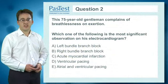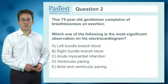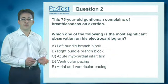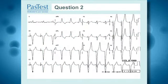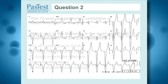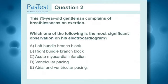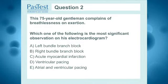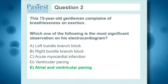Question 2: a 75-year-old gentleman complains of breathlessness on exertion. An ECG is performed in A&E. Which one of the following is the most significant observation on his electrocardiogram? If you chose E — atrial and ventricular pacing — you are correct.